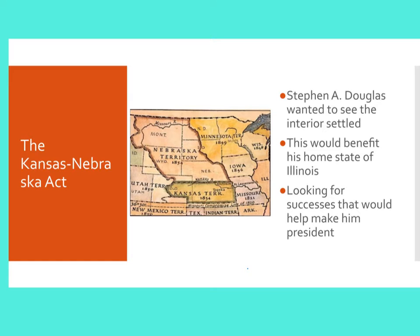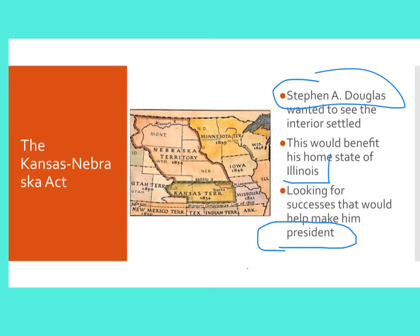So the politician was Stephen A. Douglas. He wanted to see the interior settled so that Chicago could be the jumping off point of the Transcontinental Railroad. There were other cities that were also in competition for this — you might think of New Orleans, St. Louis, or even Memphis. So the critical thing was to get settlers out there. Douglas was from Chicago, and Chicago is in Illinois. He thinks that if he does things perfectly and the Kansas-Nebraska Act is a big success, that this is going to be one of the things that propels him into the office of the presidency. So he definitely had presidential ambitions.